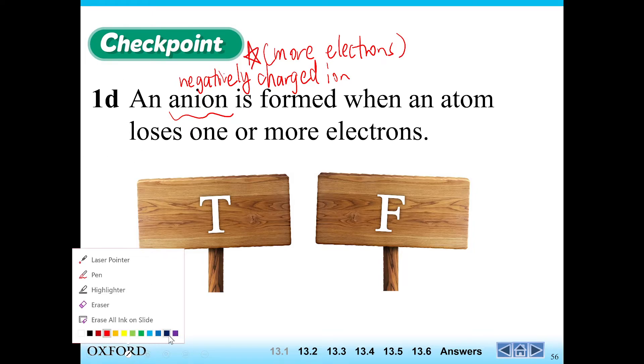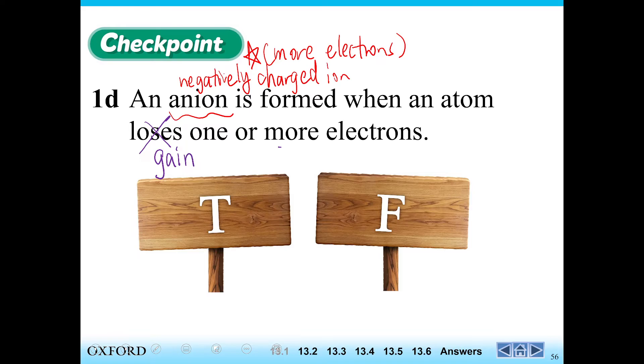And how do you get more electrons? You get more electrons when you keep getting them, right? When you're gaining electrons. So here it says when an atom loses one or more electrons. No, that's not true. You get an anion when you gain electrons. So this is false.